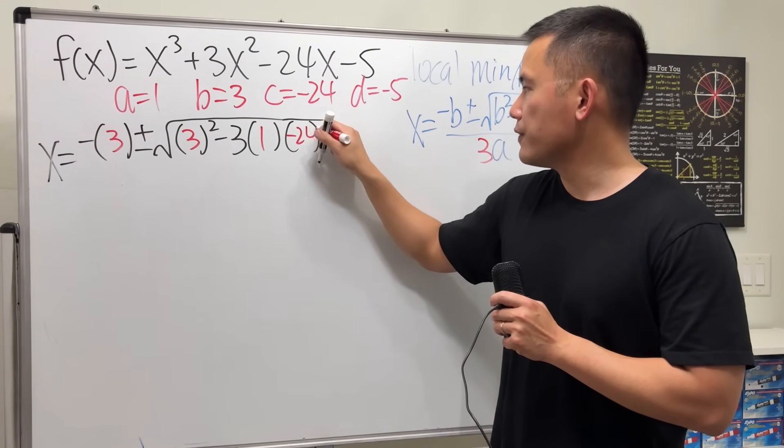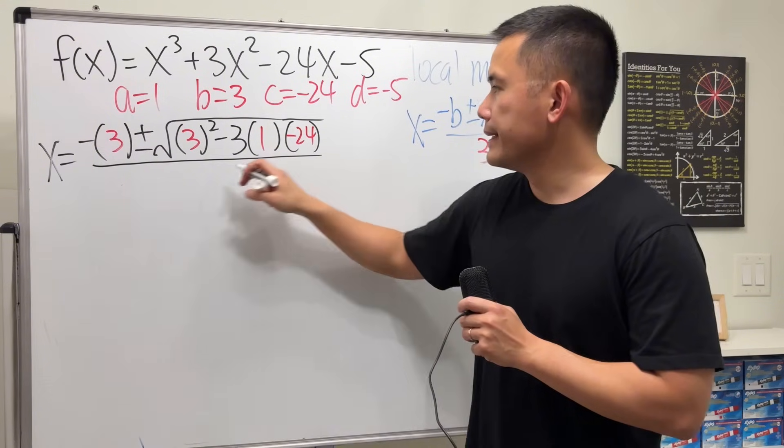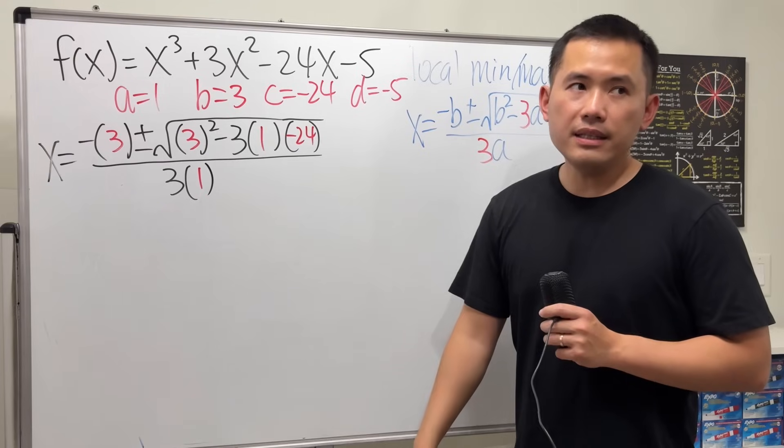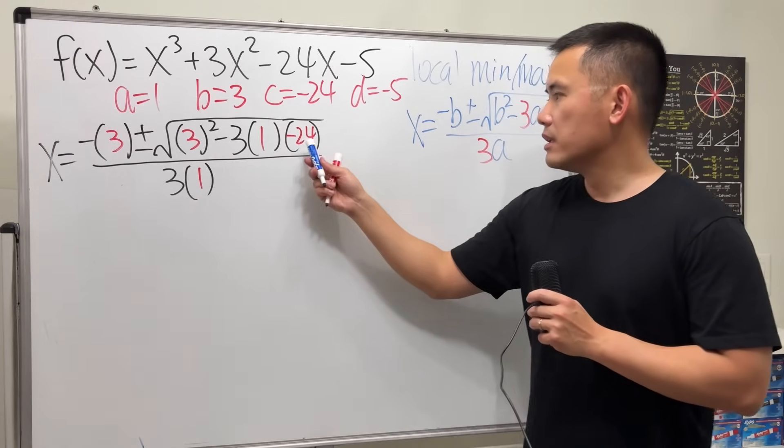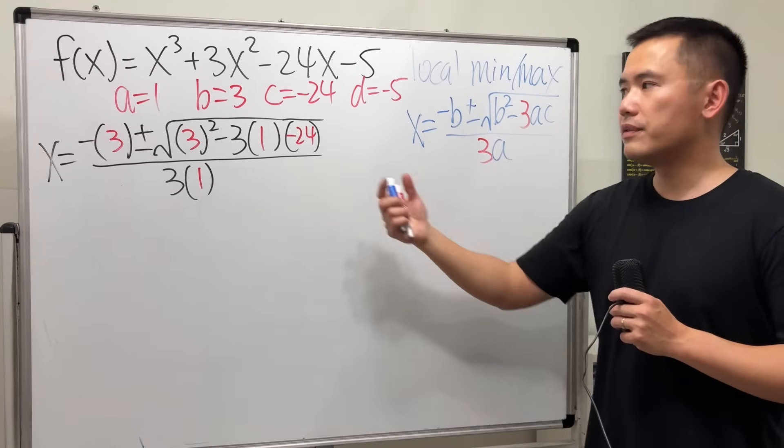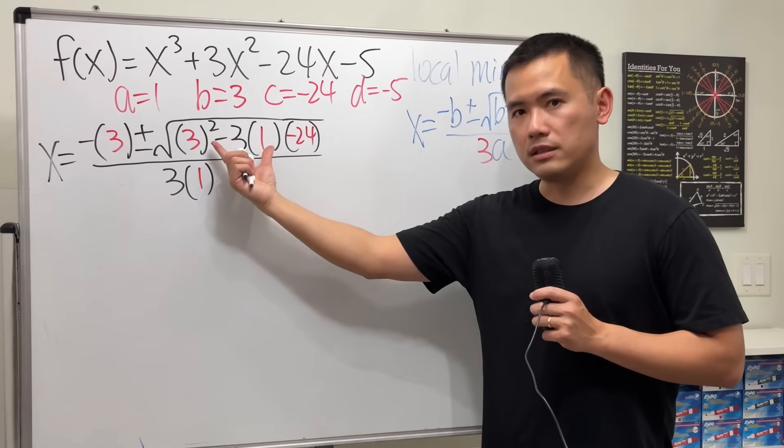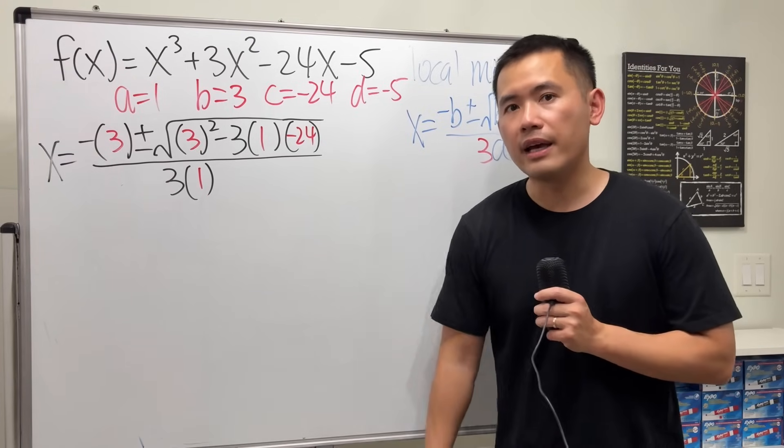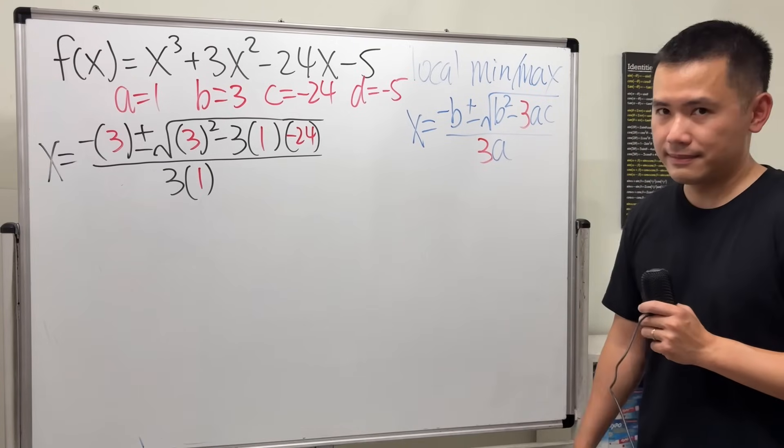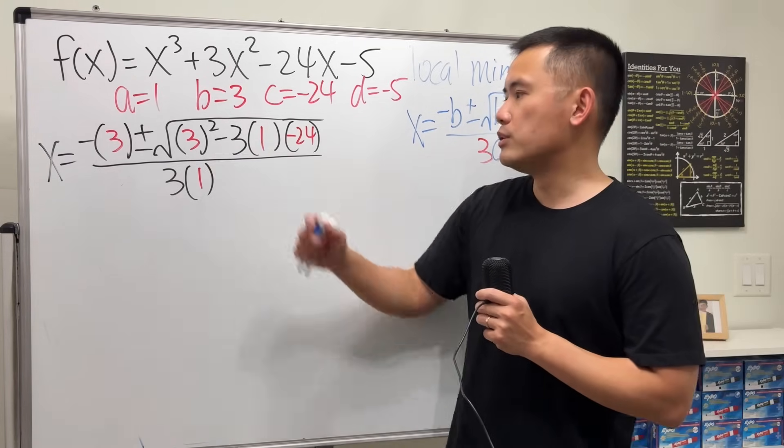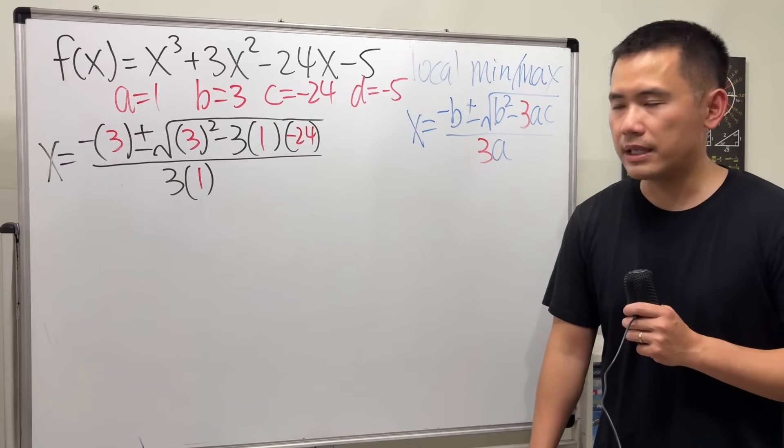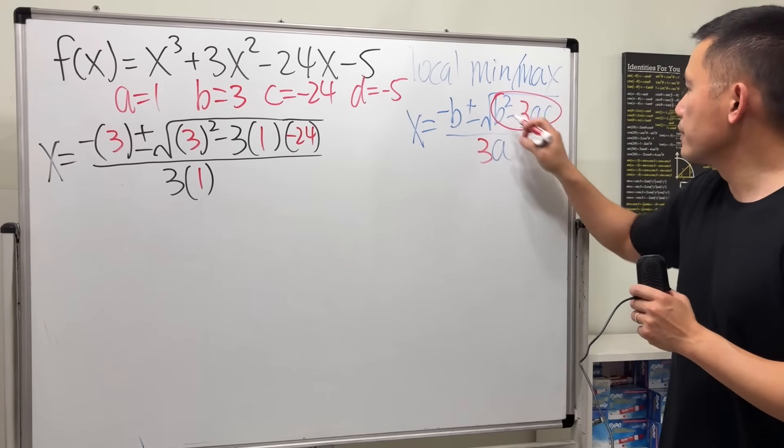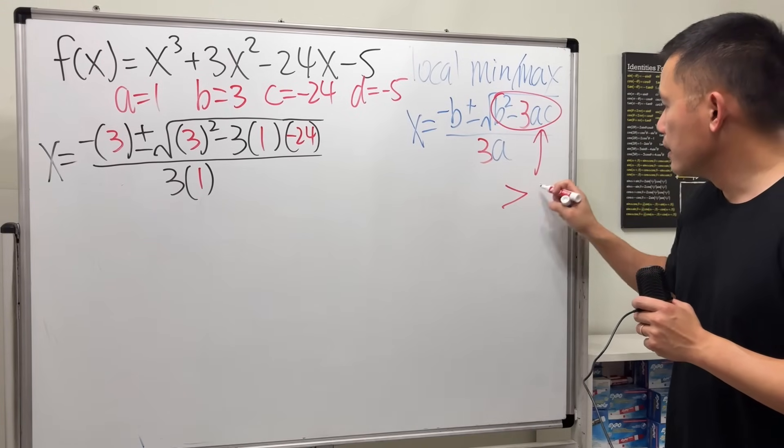And technically we should have to consider the inside right here first, because if this right here is less than zero, then we get imaginary. In fact, in that case we wouldn't have a local min/local max. If this turns out to be zero, we also don't have local min/local max. We will have to make sure that this right here has to be greater than zero in order to have a local min and also a local max.